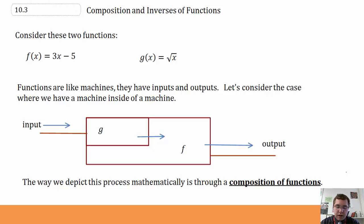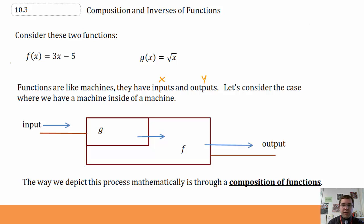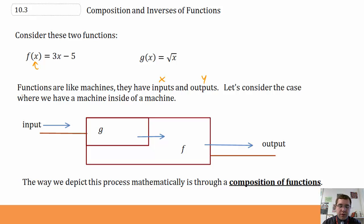Functions are like machines — they have inputs and outputs. We usually call the inputs x and the outputs y. That's the way function notation works: f of x means my input is x and it comes out as a value of y. I input whatever value of x into my equation, work it out, and get out a value for y.